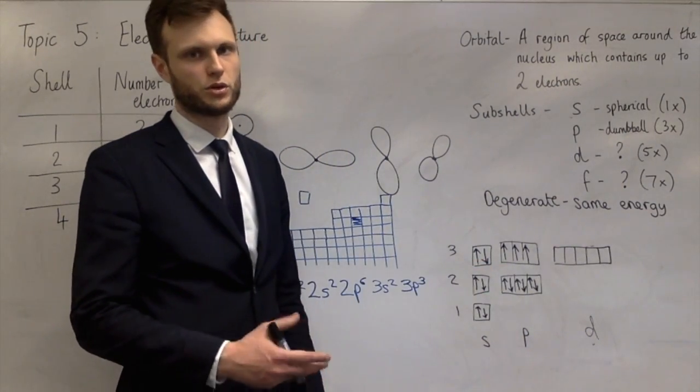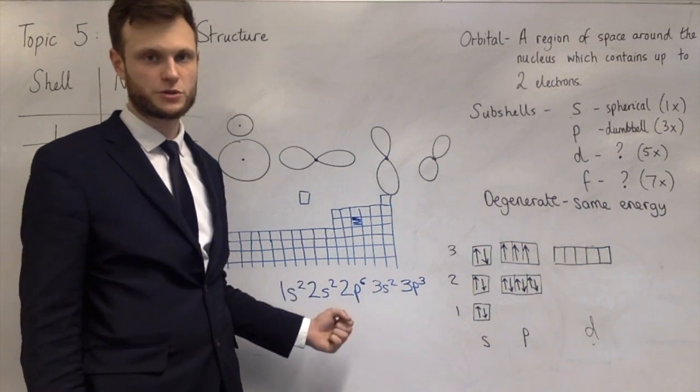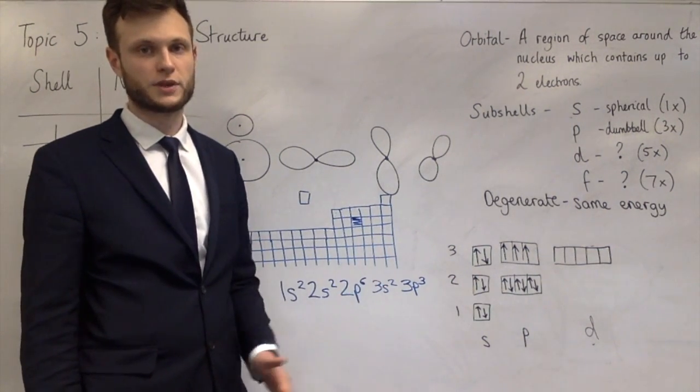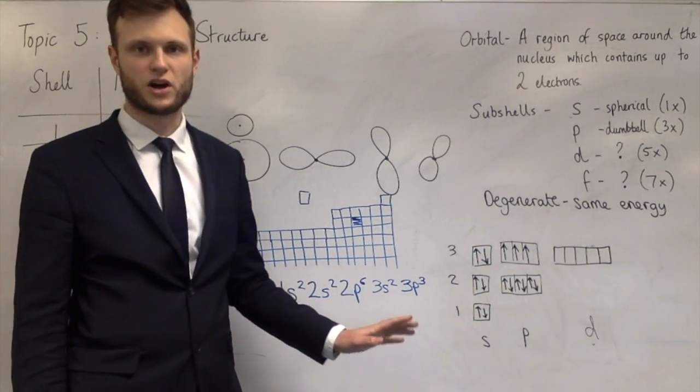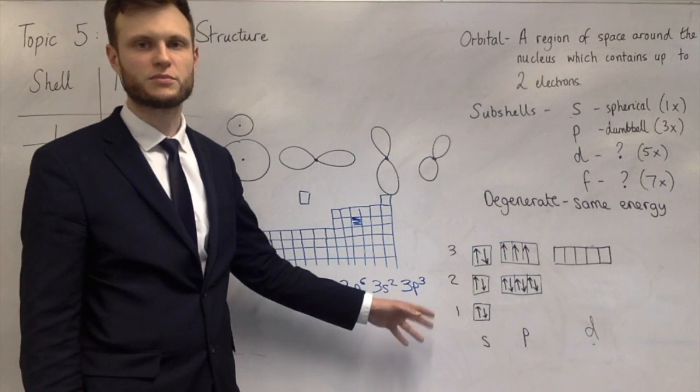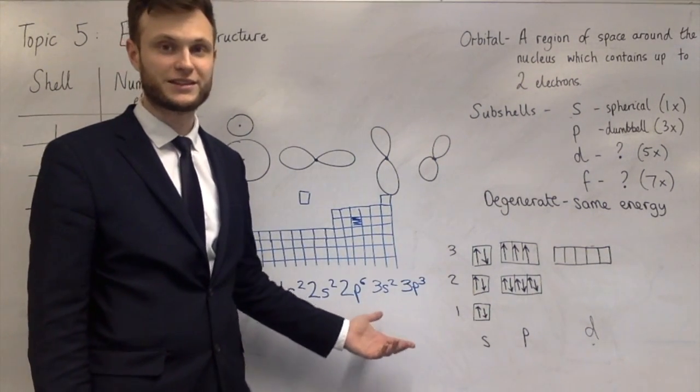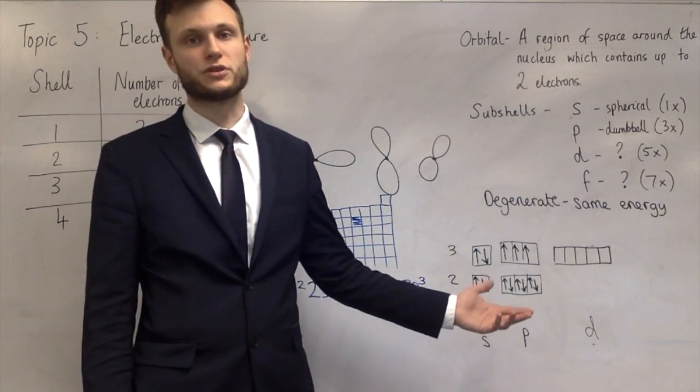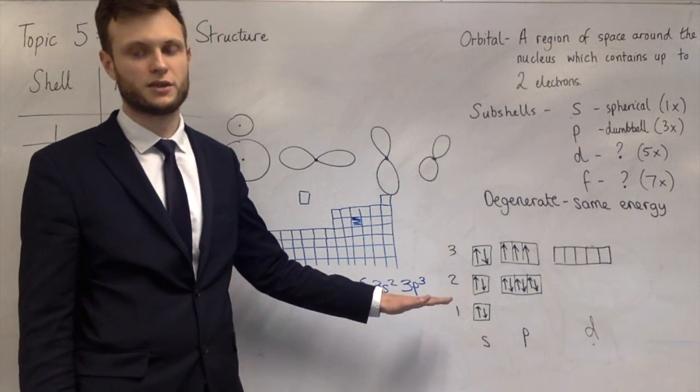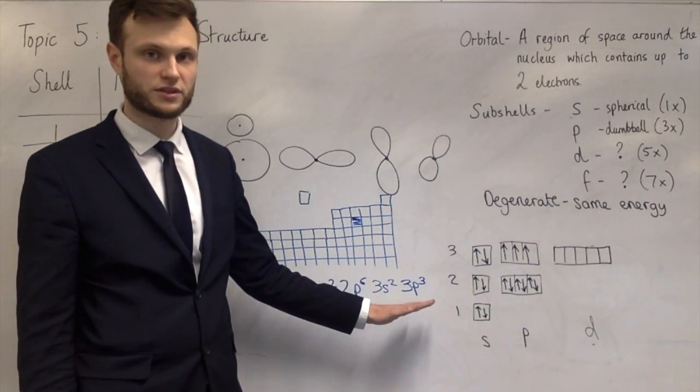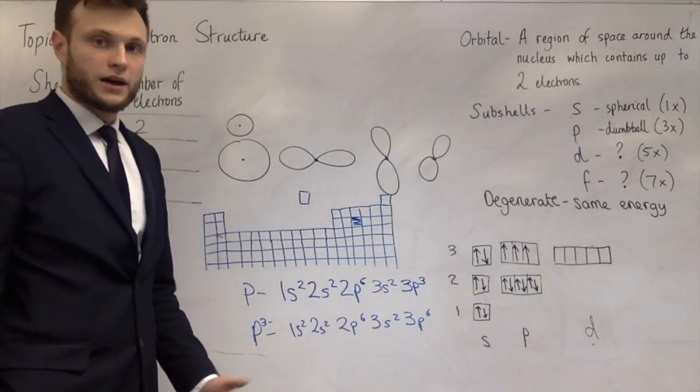Now, the last thing you need to be able to do is the same subshell notation, but for ions. And with ions, you do exactly the same as you've done before, but if it's a positive ion, you take out as many electrons as there are positive charges. And if it's a negative ion, you add in as many electrons as there are negative charges. So, for instance, phosphorus 3- would be the same as phosphorus, but with three extra electrons. So it would be 3P6. And that's it for now.